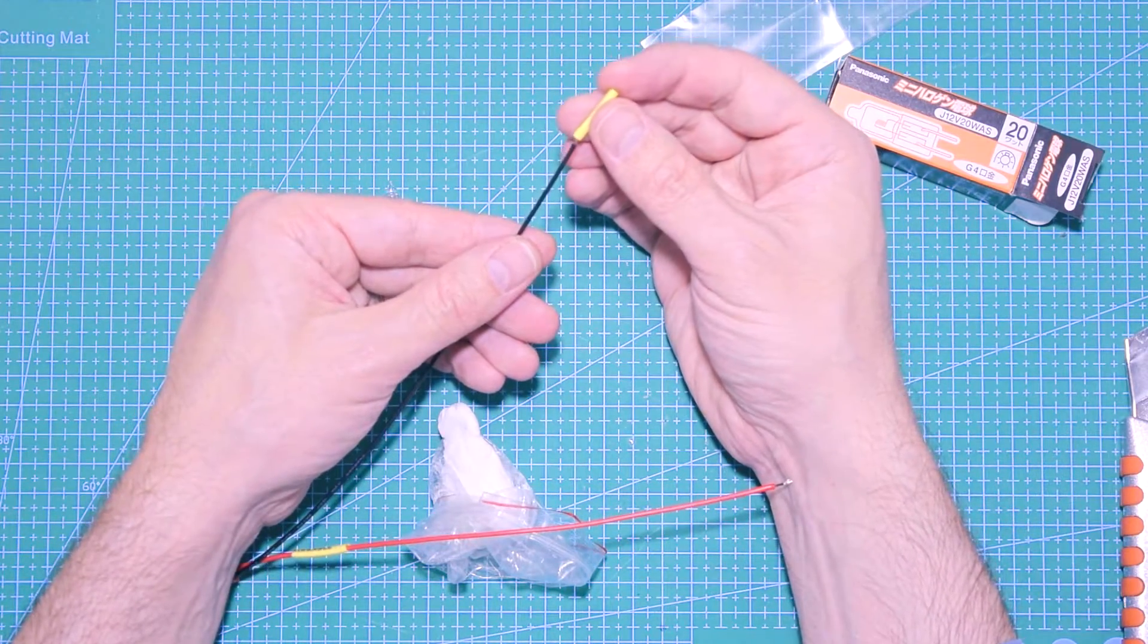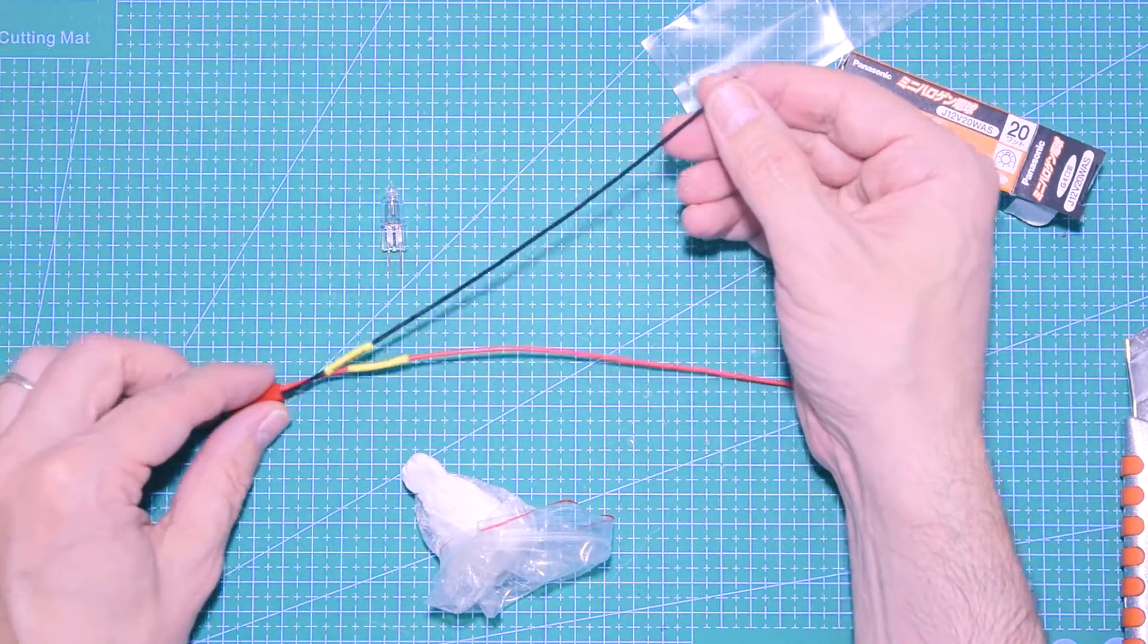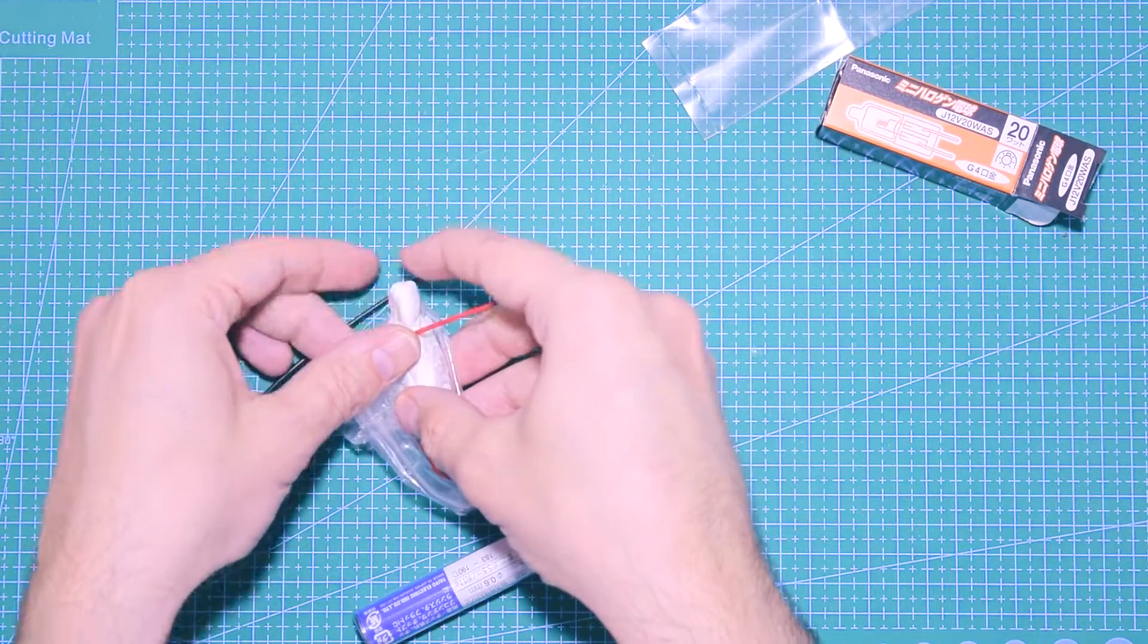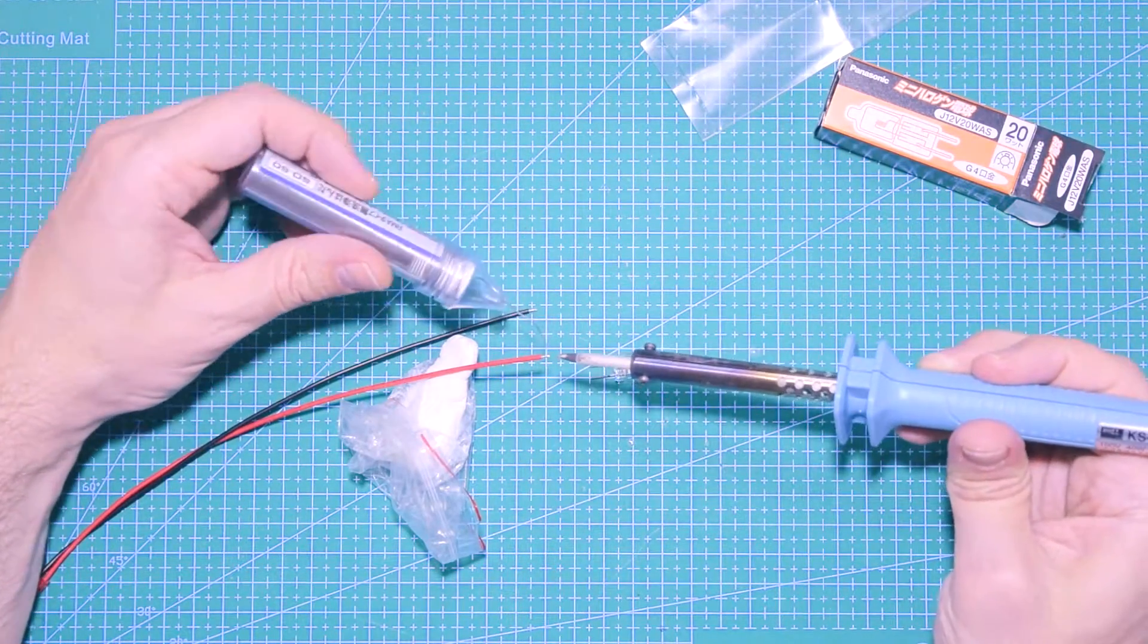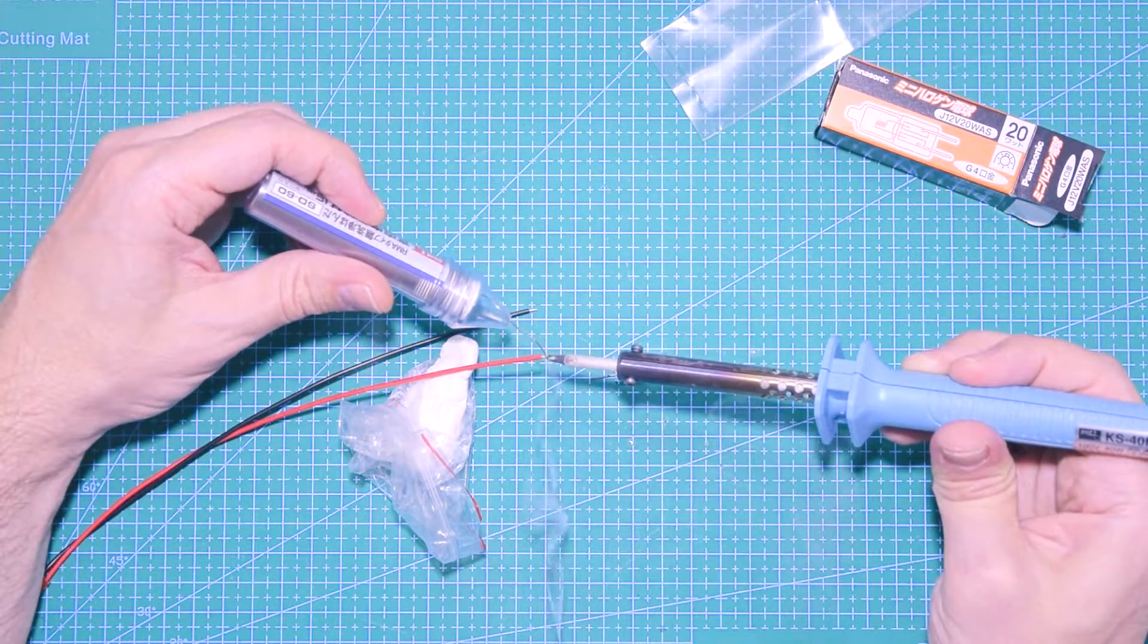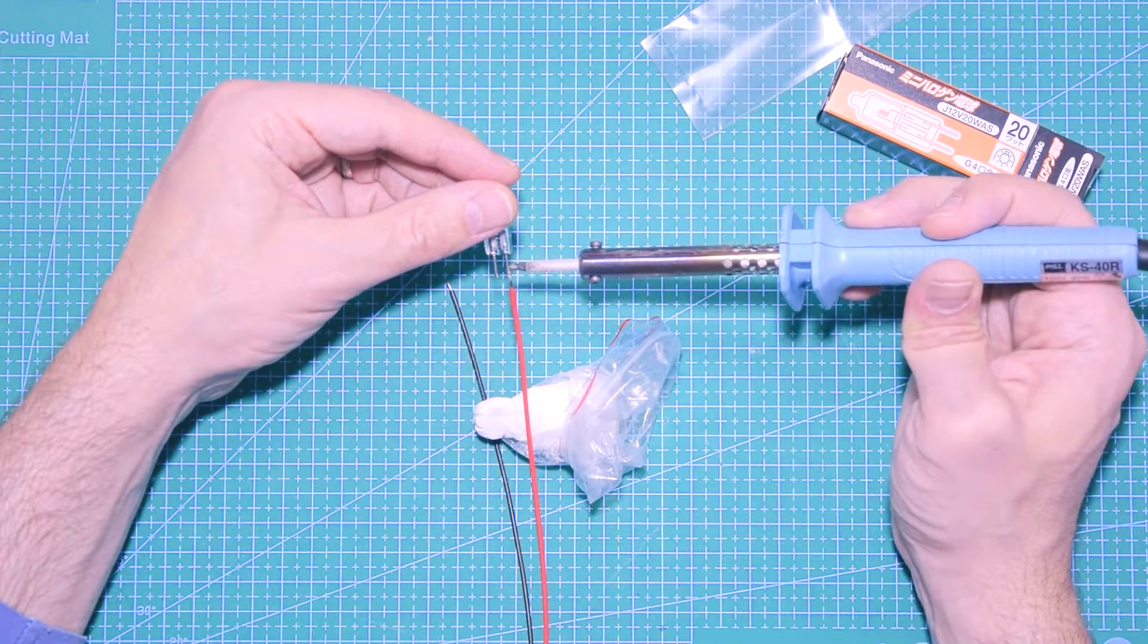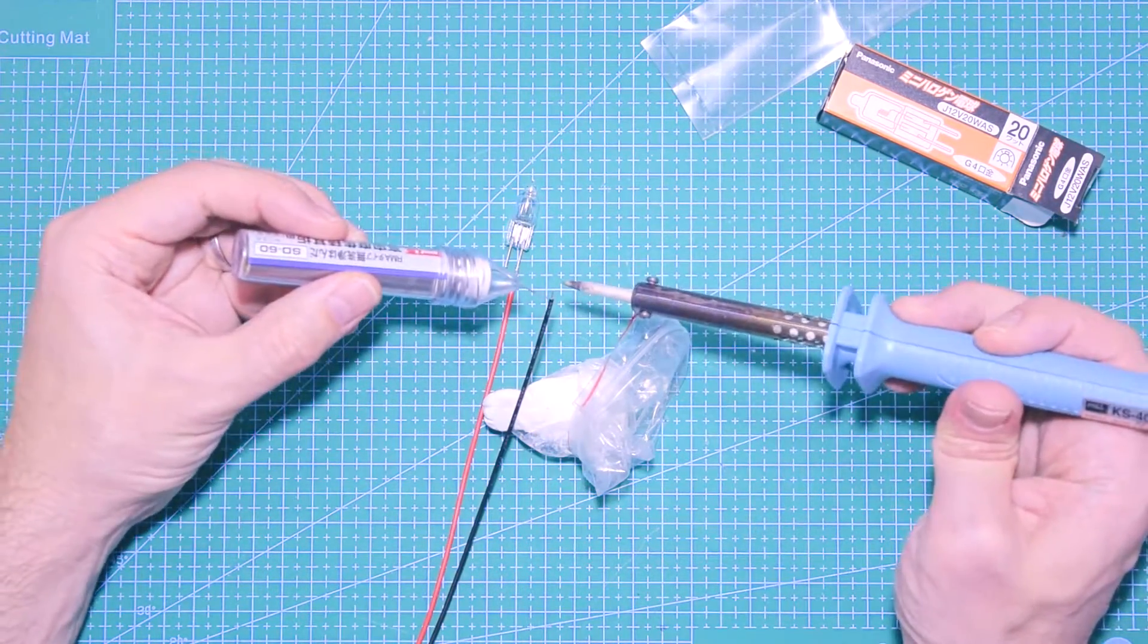It doesn't really matter the order that you solder them, there is no ground or anything like that. I'm gonna put some heat shrink and use my putty eraser to keep the wire nice and firm while I tin it with the solder. Then I connect one cable to one of the pins of the lamp and do the same thing from the other side.